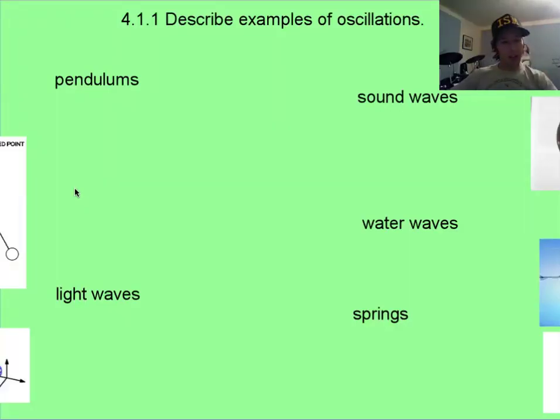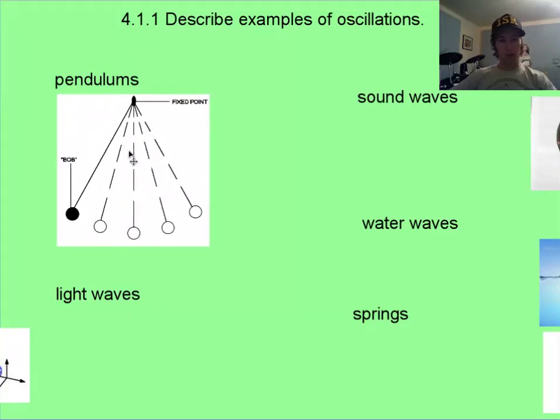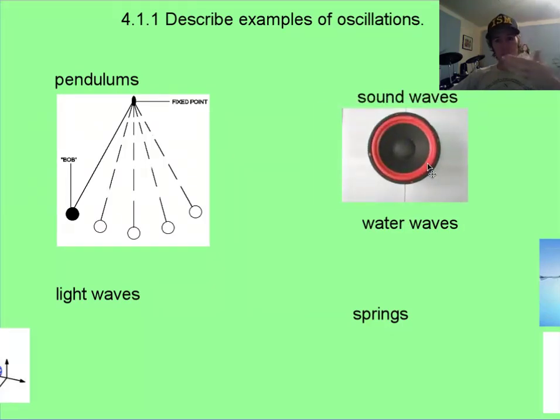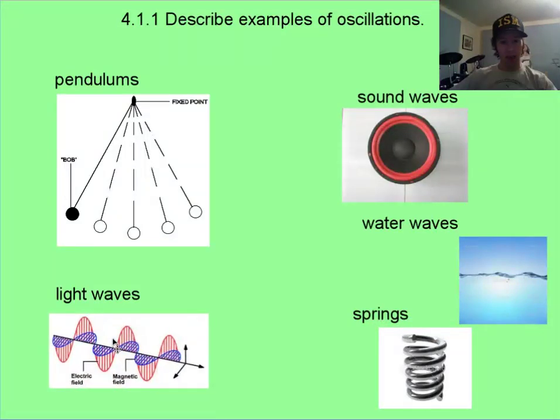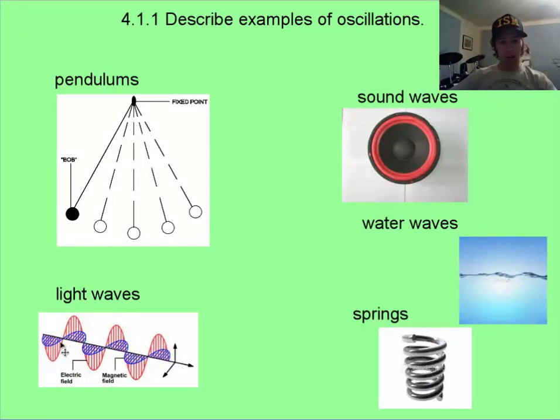If something's oscillating, it's just going back and forth. And there are several examples. You've got your traditional swinging pendulum. Speakers actually are oscillating back and forth quicker than your eye can discern. You've got your common water waves, springs do all sorts of bouncing around, and light waves are actually you can think of as an electromagnetic field that is oscillating.